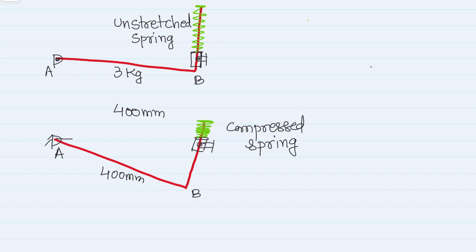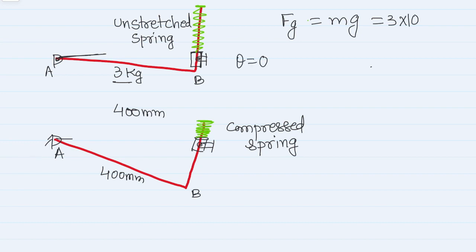In the question it is given that the mass of the rod is 3 kilograms. So the force due to gravity is m×g, that is 3×10. The other force is because of the spring. When theta is 0 degrees the spring is in the unstretched condition, and when the system acquires the static equilibrium state there will be some compression in the spring. Based on the diagram, that length will be the compression in the spring.